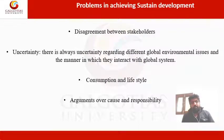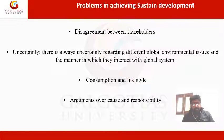However, there are some problems and hurdles in achieving sustainable development. The first problem is disagreement between stakeholders — between different states, different countries, and different companies. Each stakeholder has different priorities and interests, making it extremely difficult for all to agree upon the common goal of sustainable development.